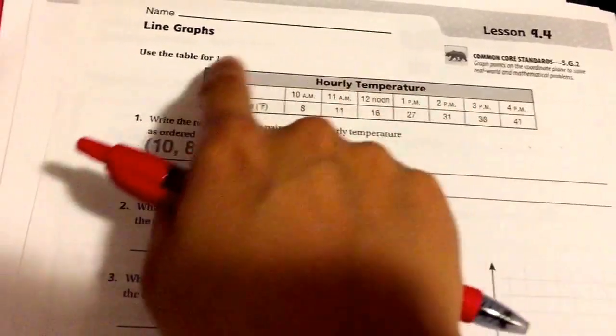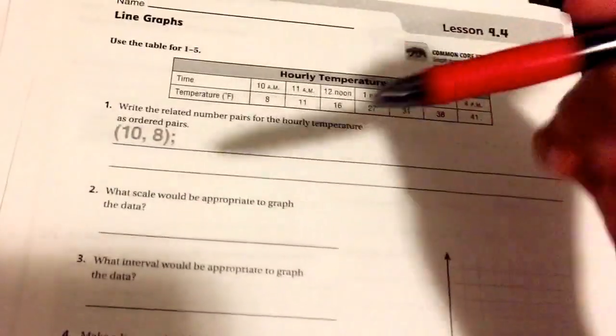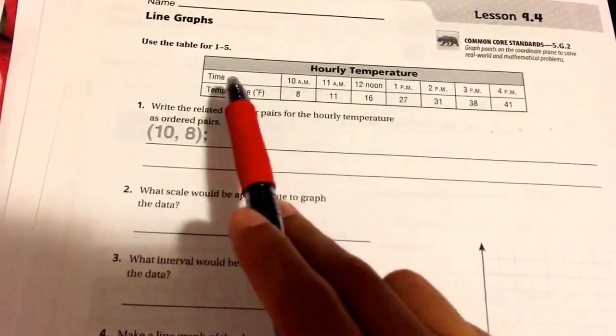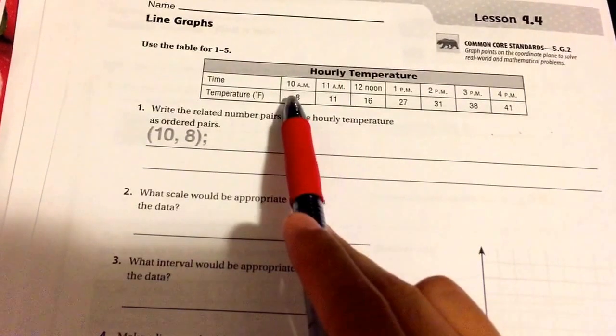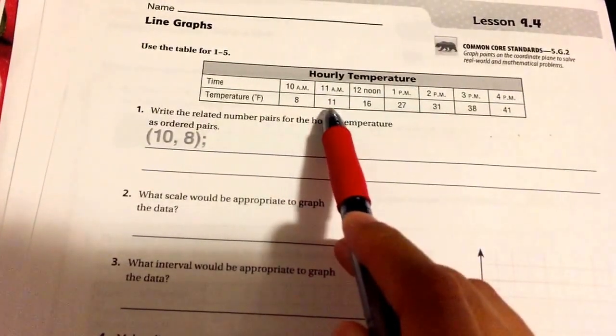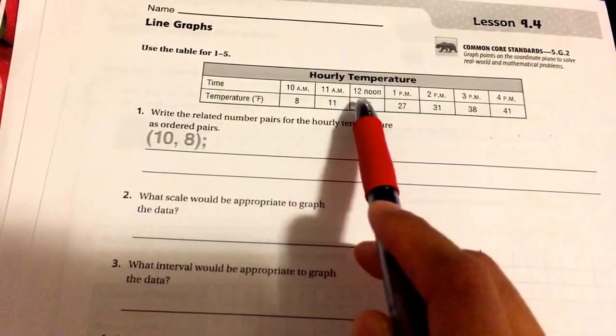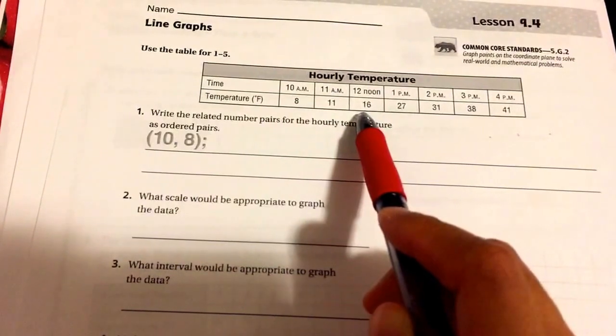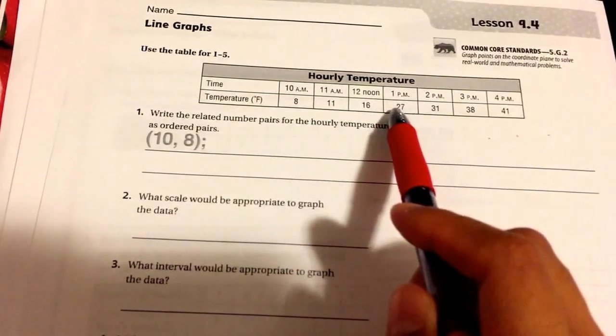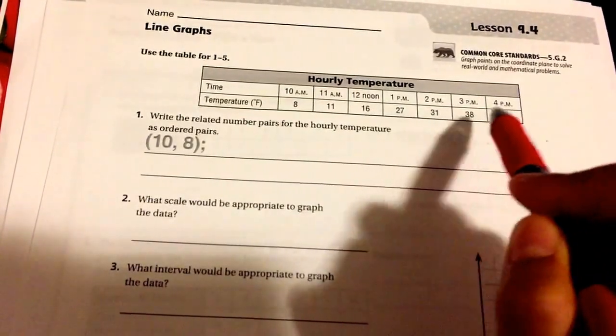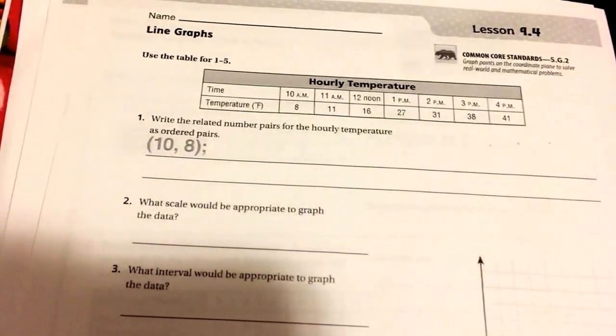So here's our data. We're going to use this table for questions 1 through 5. This is tracking the hourly temperature, and when the time was 10 a.m., the temperature was 8 degrees Fahrenheit. At 11 a.m., an hour later, it rose to 11 degrees Fahrenheit.